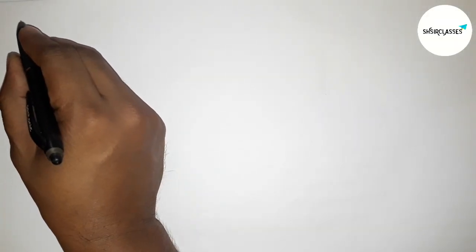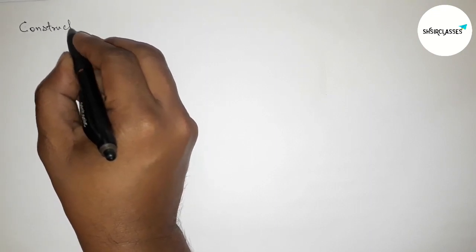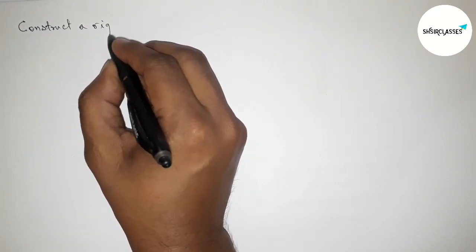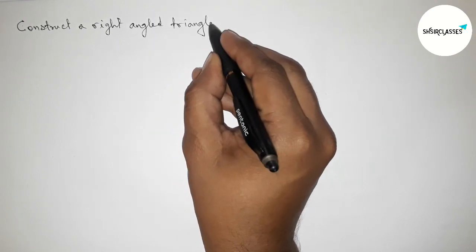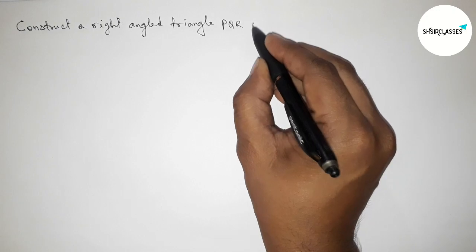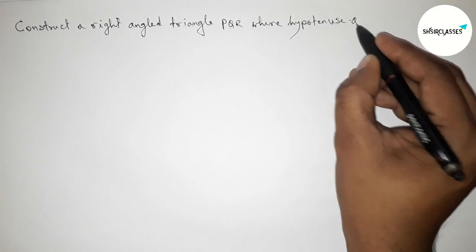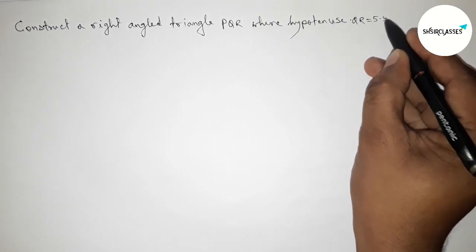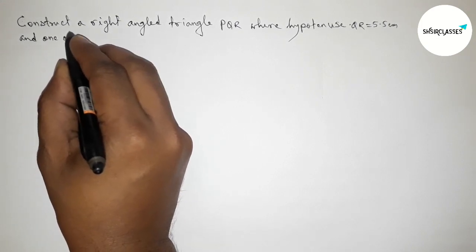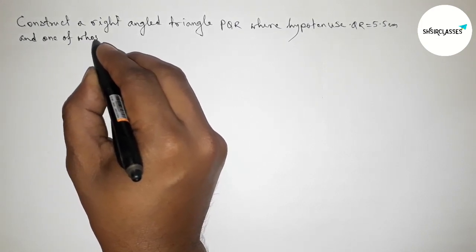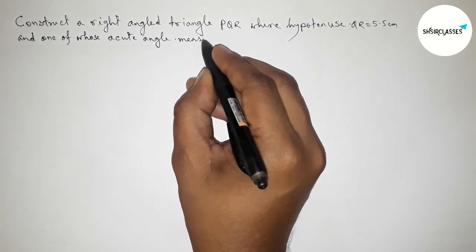Hi everyone, welcome to SA Share Classes. Today in this video we have to construct a right angled triangle PQR where the hypotenuse QR equals 5.5 centimeters and one of whose acute angles measures 30 degrees. Please watch the video till the end. Let's start the video.